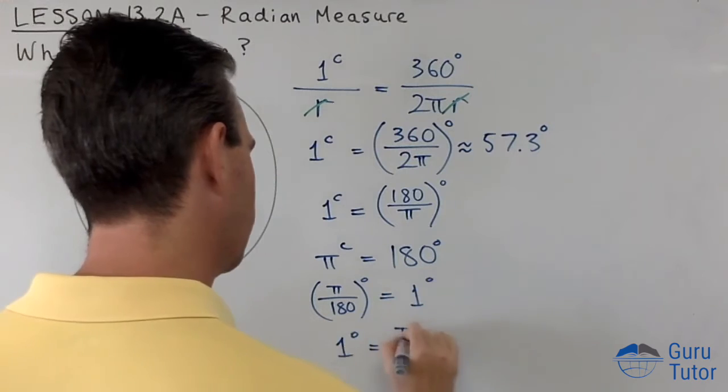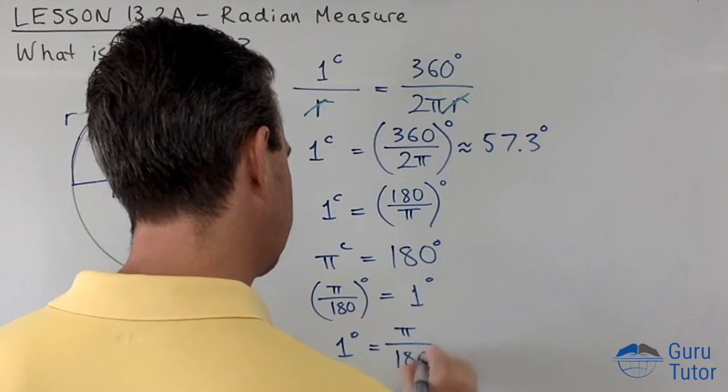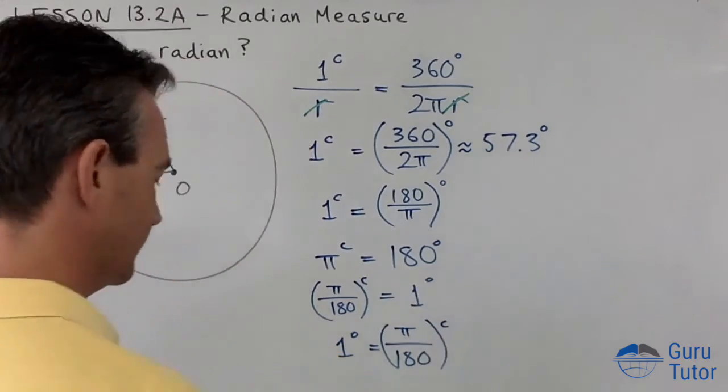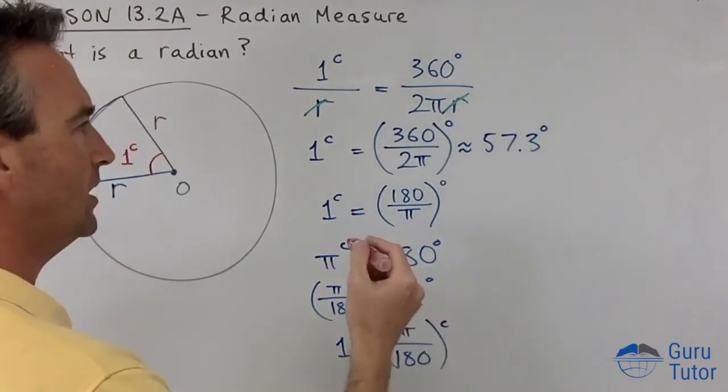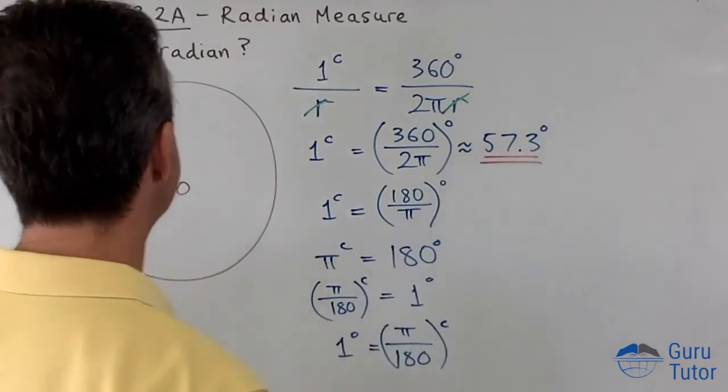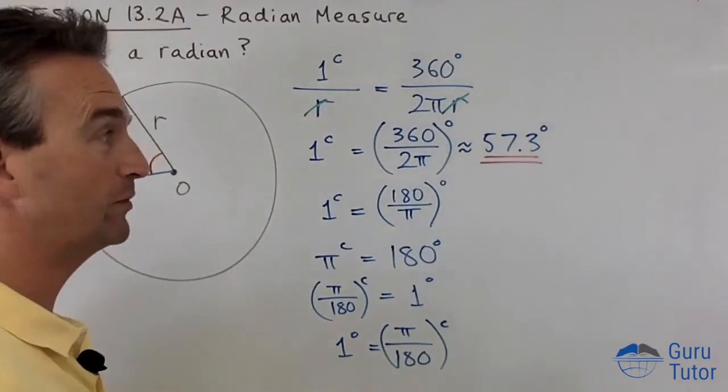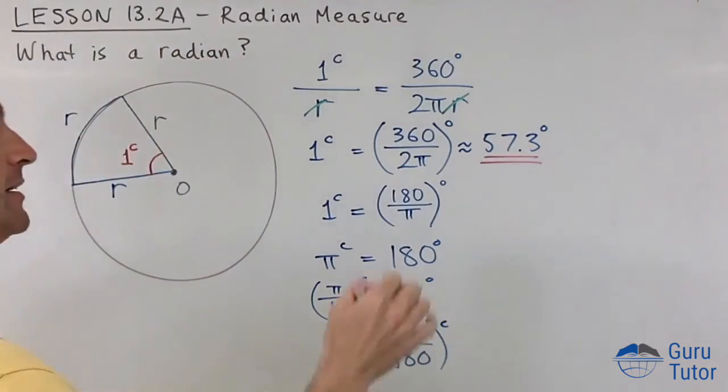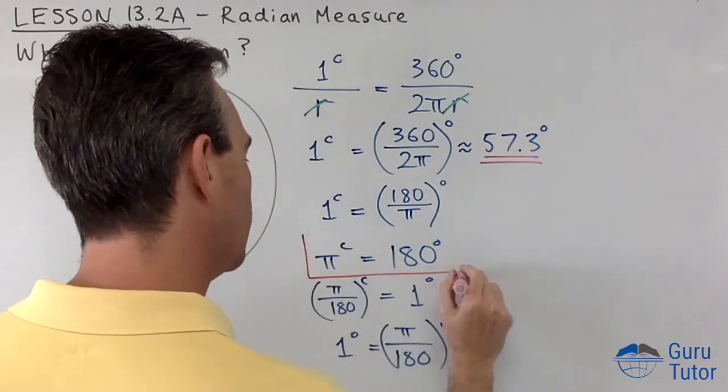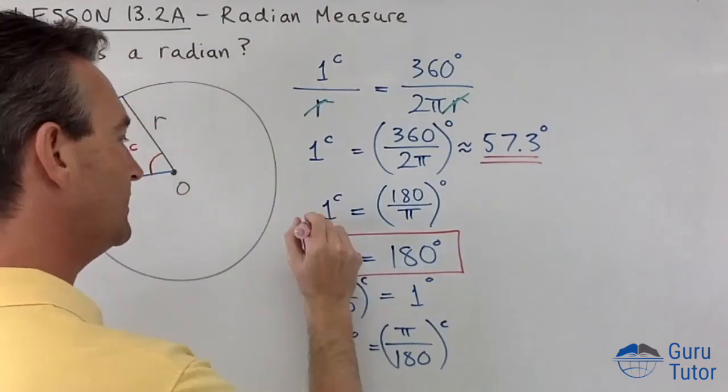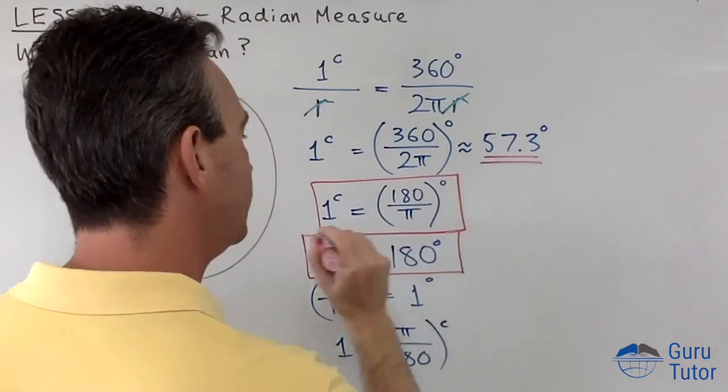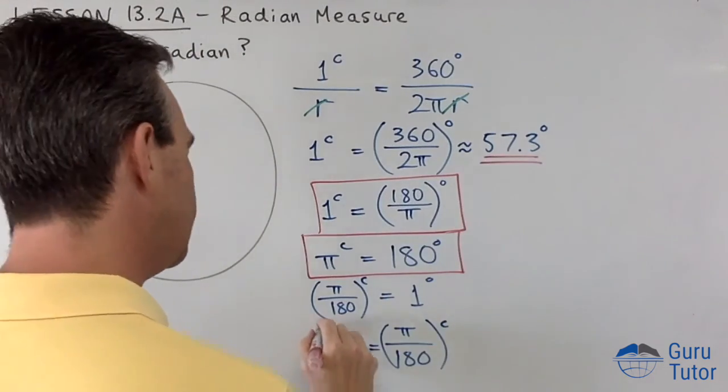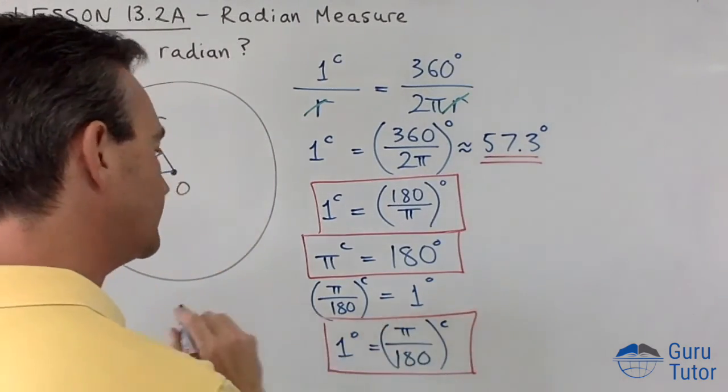And then if I divide both sides by 180, I will get π over 180 radians is one degree. Let's flip that around: one degree is π over 180 radians. So these are the useful ones. You can remember that. You can impress people at parties with that—one radian is 57.3 degrees. But this one's handy: π radians is 180 degrees. This one's handy: one radian is 180 divided by π. And one degree is π over 180 radians.